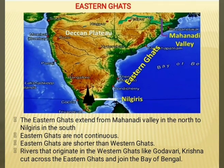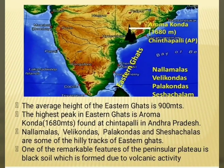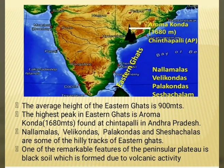The Eastern Ghats extend from Mahanadi Valley in the north to Nilgiris in the south. Eastern Ghats are not continuous ranges and are shorter than Western Ghats. Rivers originating in the Western Ghats, like Godavari and Krishna, cut across the Eastern Ghats and join the Bay of Bengal. The average height of the Eastern Ghats is 900 meters. The highest peak is Arma Konda, found at Chintapalli in Andhra Pradesh. Nallamala, Velikonda, Palakonda and Sheshachala are some of the hilly tracts of the Eastern Ghats. One of the remarkable features of the Peninsular Plateau is black soil, which is formed due to volcanic activity.